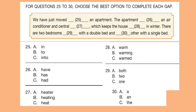For questions 25 to 30, choose the best option to complete each gap. We have just moved dash an apartment. The apartment dash an air conditioner and central dash, which keeps the house dash in winter. There are two bedrooms — dash with a double bed and dash other with a single bed. Fill in all these blanks from question 25 to 30. Select your answer and write it down.